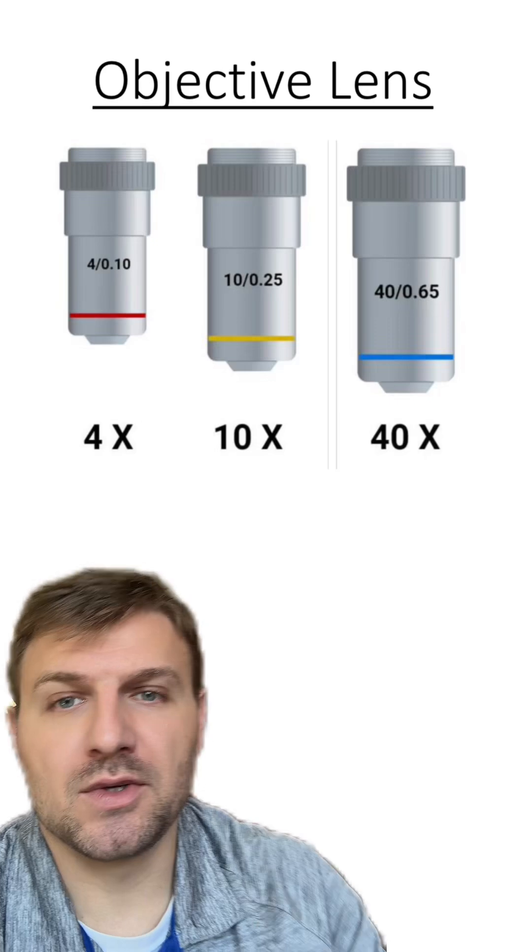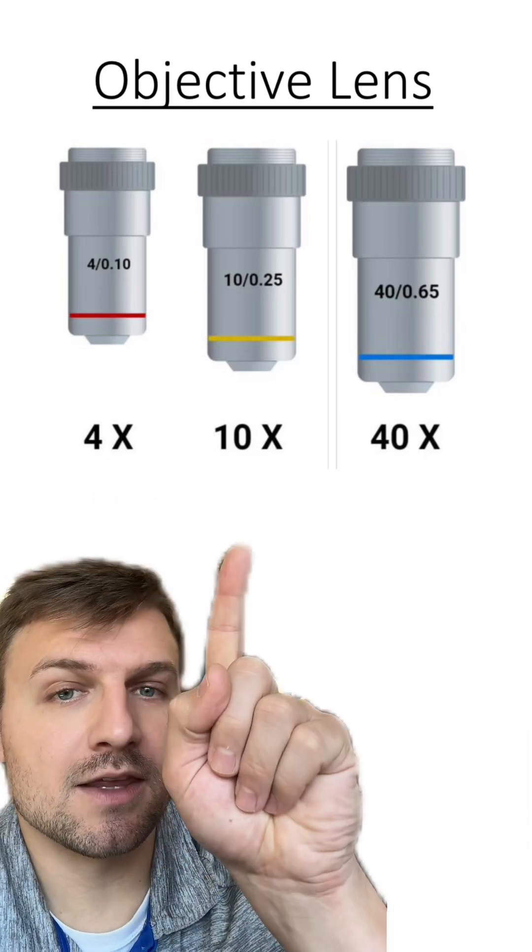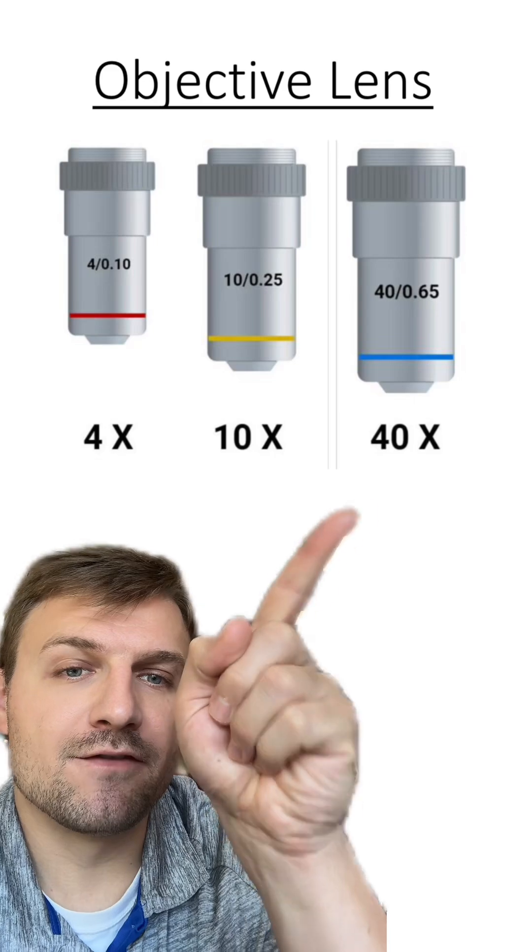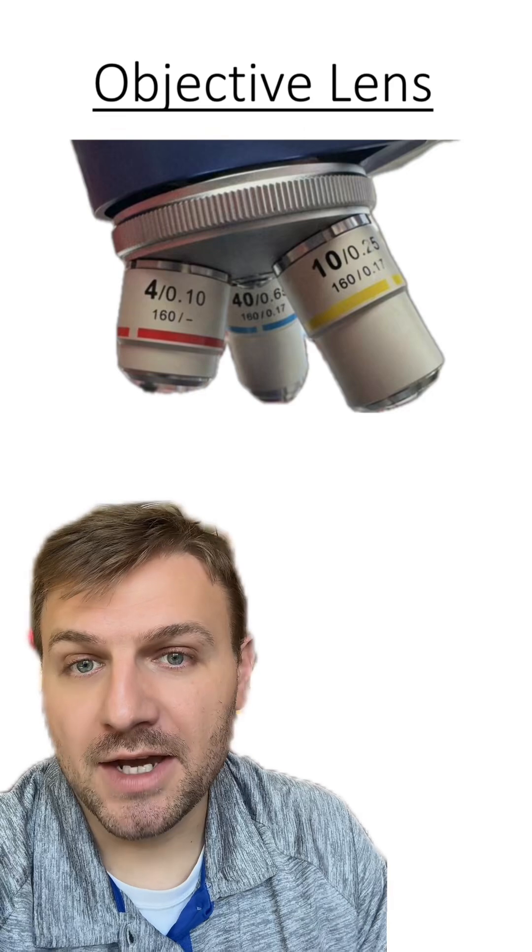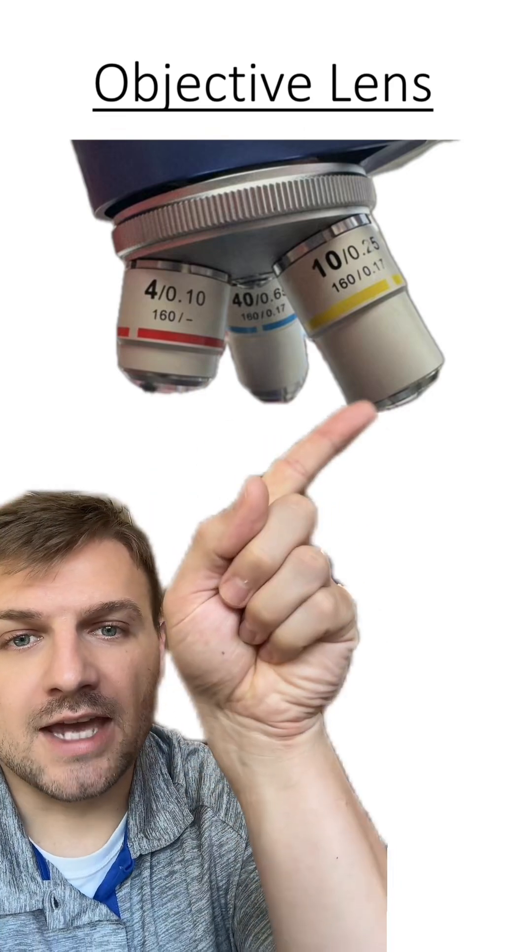Here's another way of looking at those objective lenses. You can see the 4, which is usually red, the 10, which is usually yellow, and the 40, which is usually blue. This is an image of what our microscopes look like at my school. You can see the 4, the 10, and the 40.